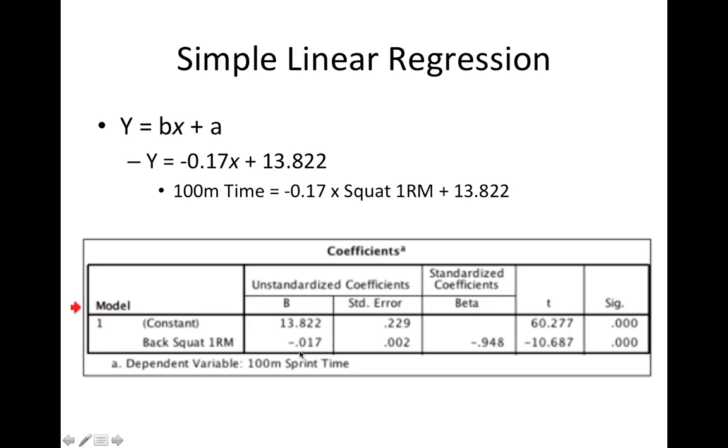So all we need to do is place that value into this equation in place of a. And the value underneath represents the slope of the line. So minus 0.017 needs to be placed into the equation instead of b. And then all we need to do is insert an individual's squat score, their one repetition max for the squat. And we can start to predict an individual's level of performance in the 100-meter sprint.